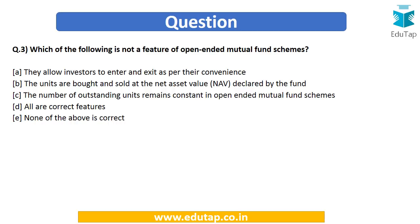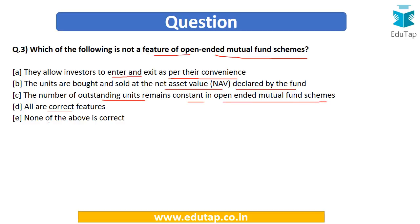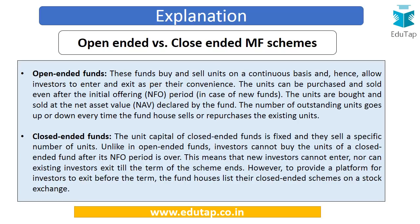The third question asks: which of the following is not a feature of open-ended mutual fund schemes? The options are: (A) they allow investors to enter and exit as per their convenience; (B) units are bought and sold at the net asset value declared by the fund; (C) the number of outstanding units remains constant in open-ended mutual fund schemes; (D) all are correct; or (E) none of the above.